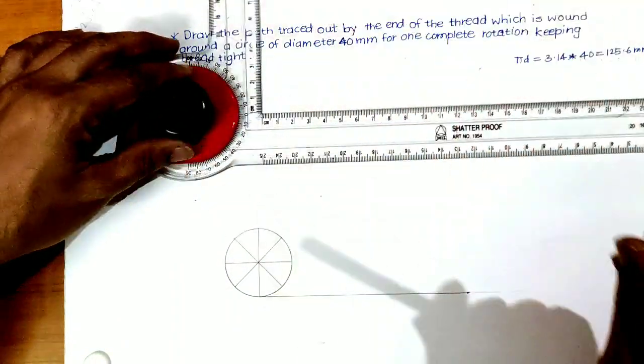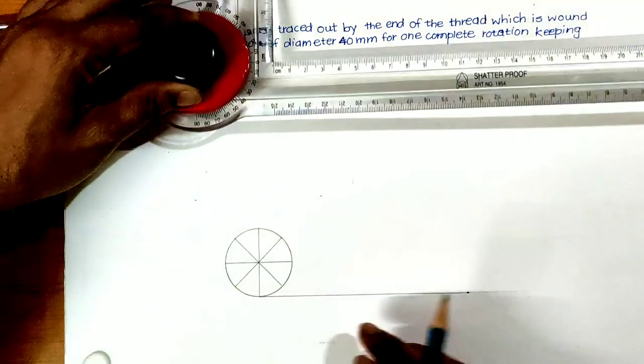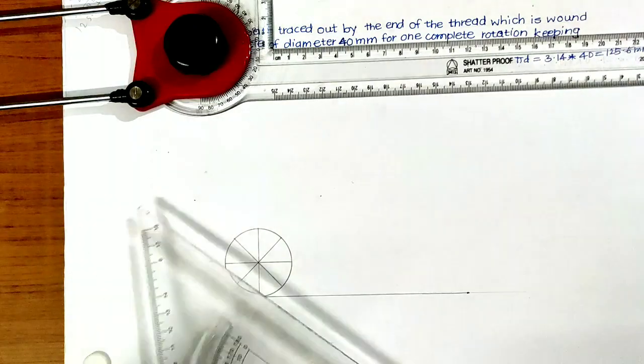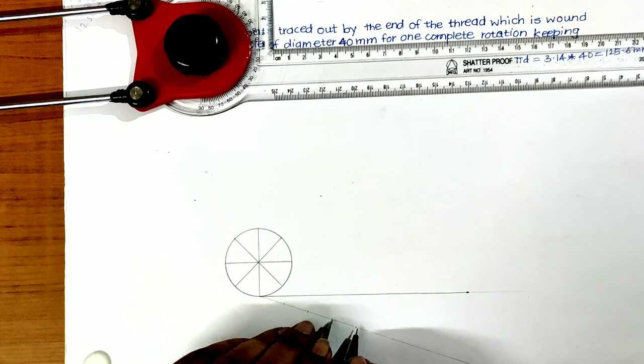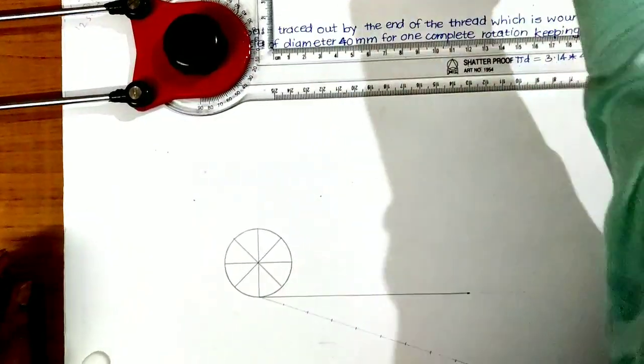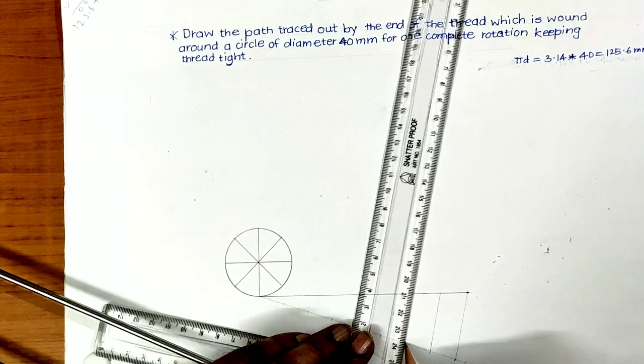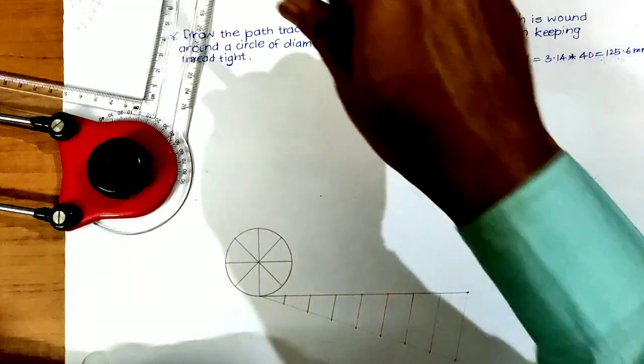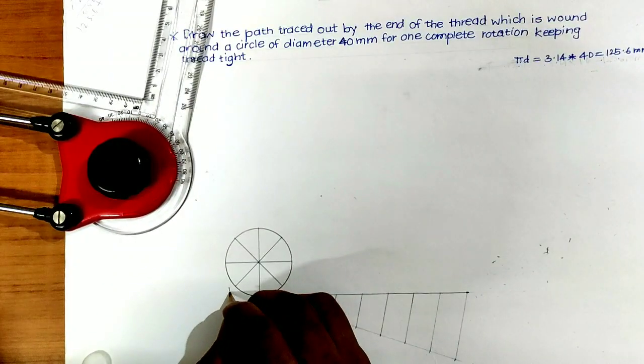After that, divide this length into same number of equal parts as of circle. Join the ends. Let us give numbers 1, 2...